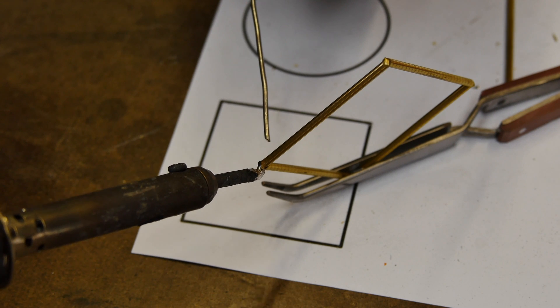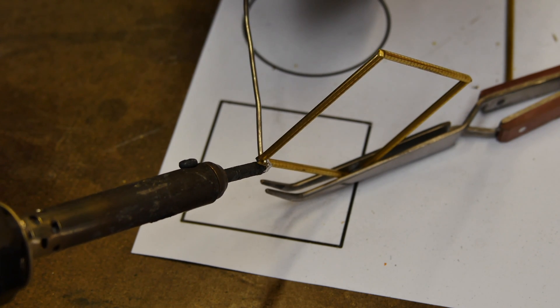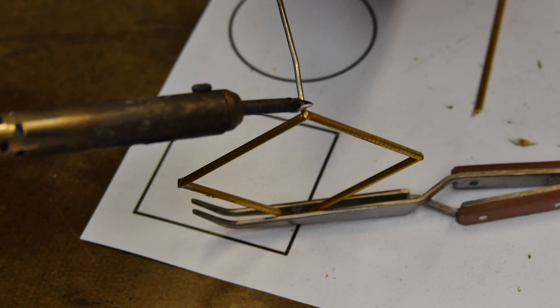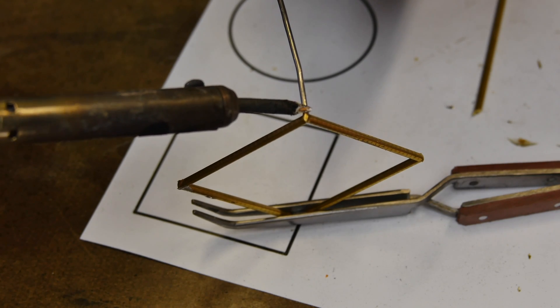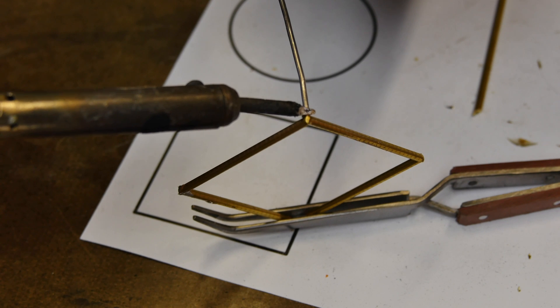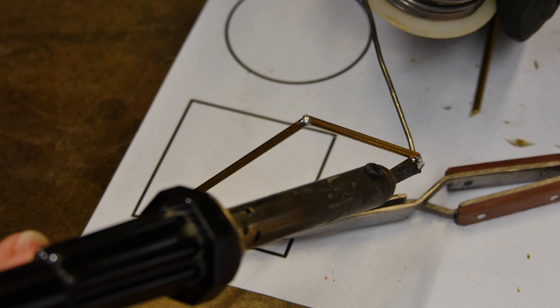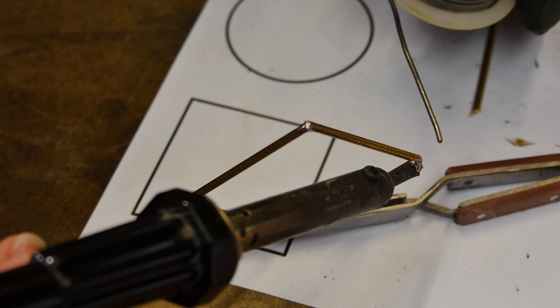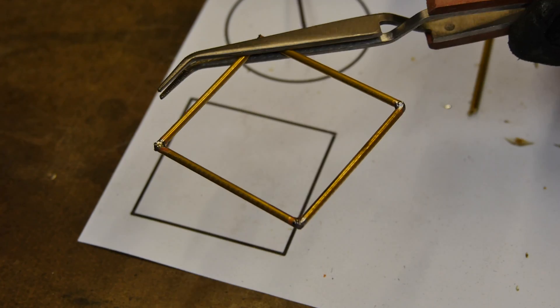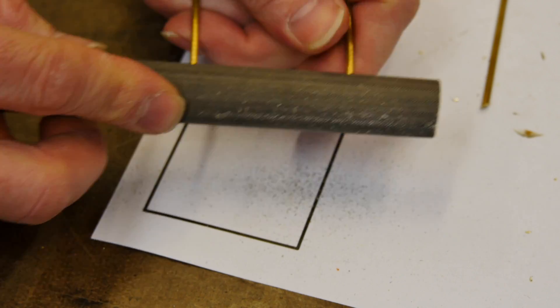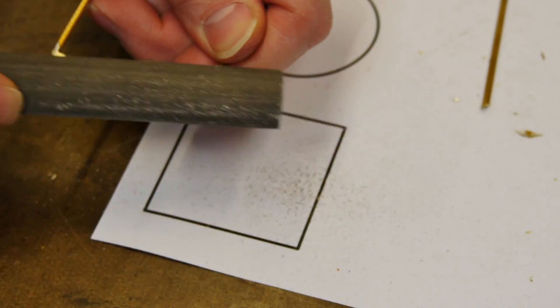And I'm going to come back and solder each of the corners to give it a little bit of strength and so that we can fill in any gaps as well. And we're going to need that because we're going to solder on some corner posts in the next step.